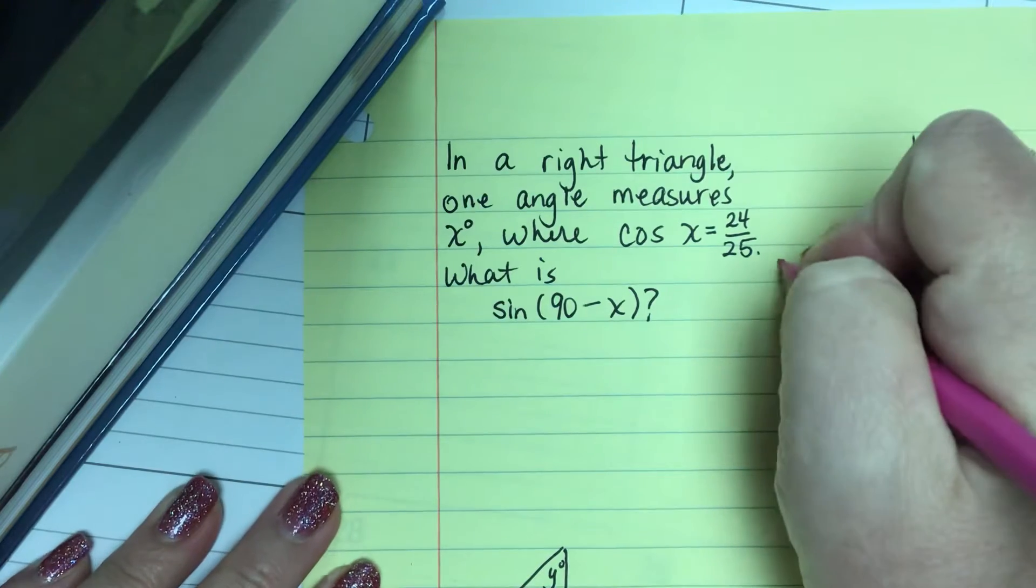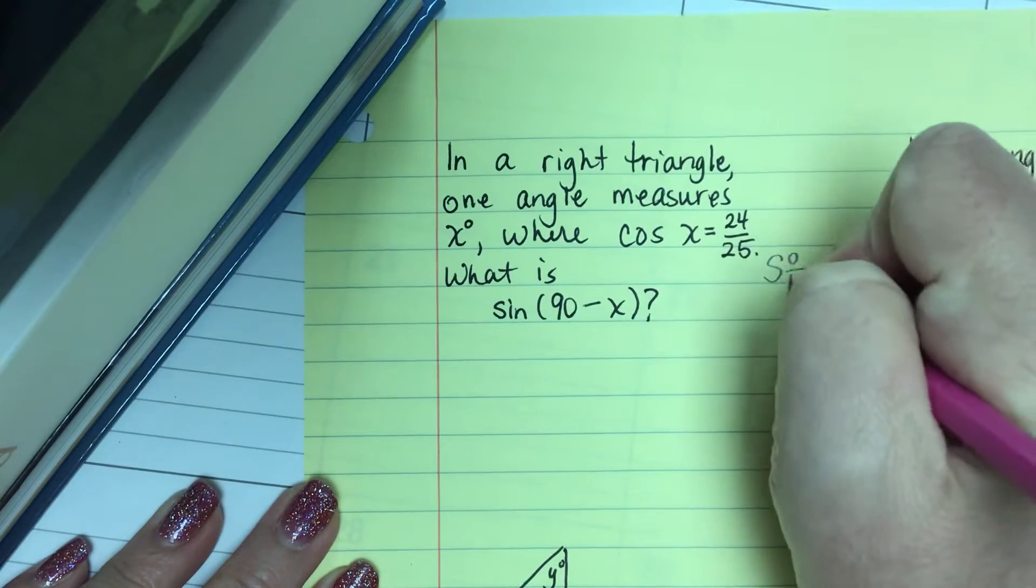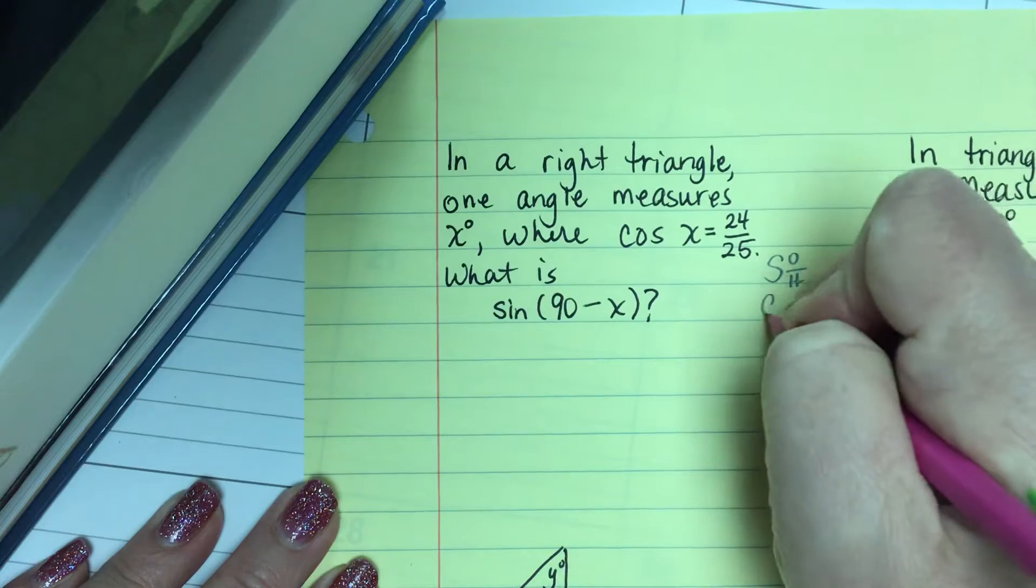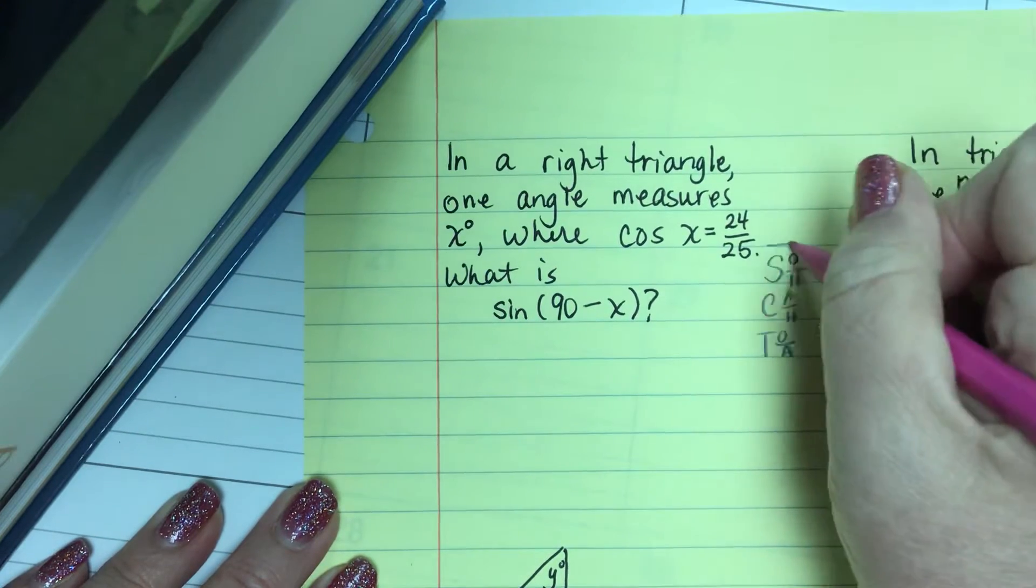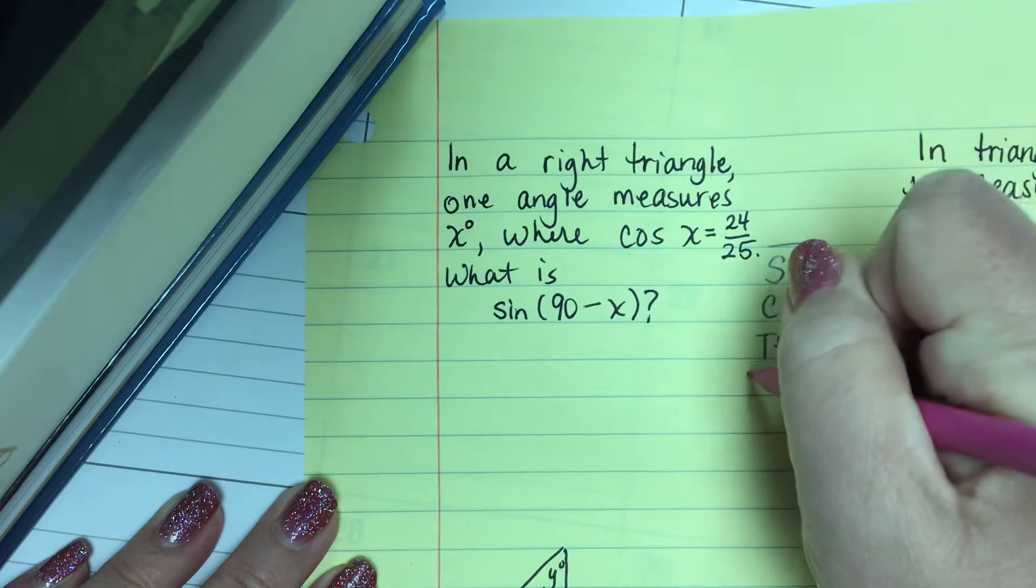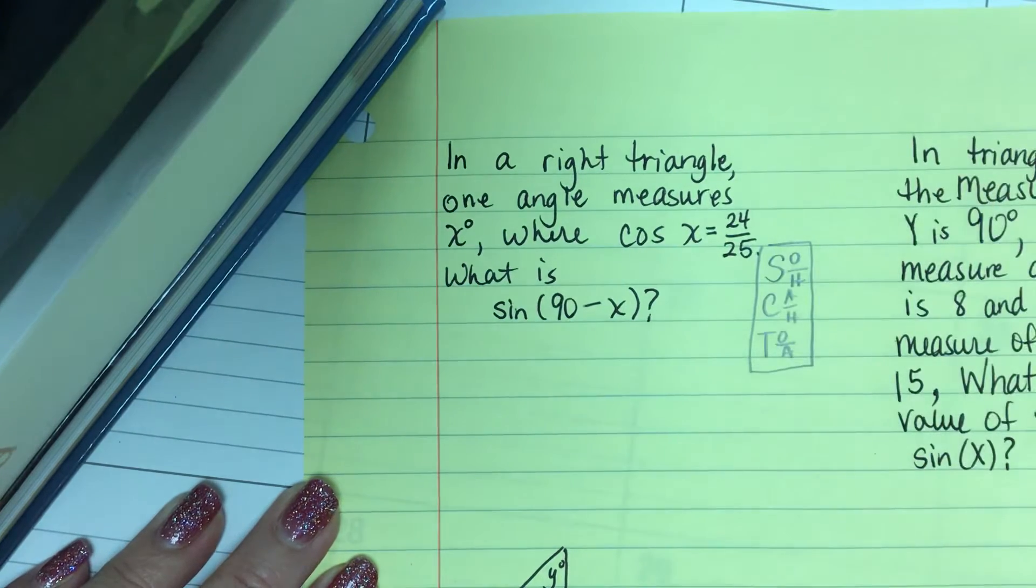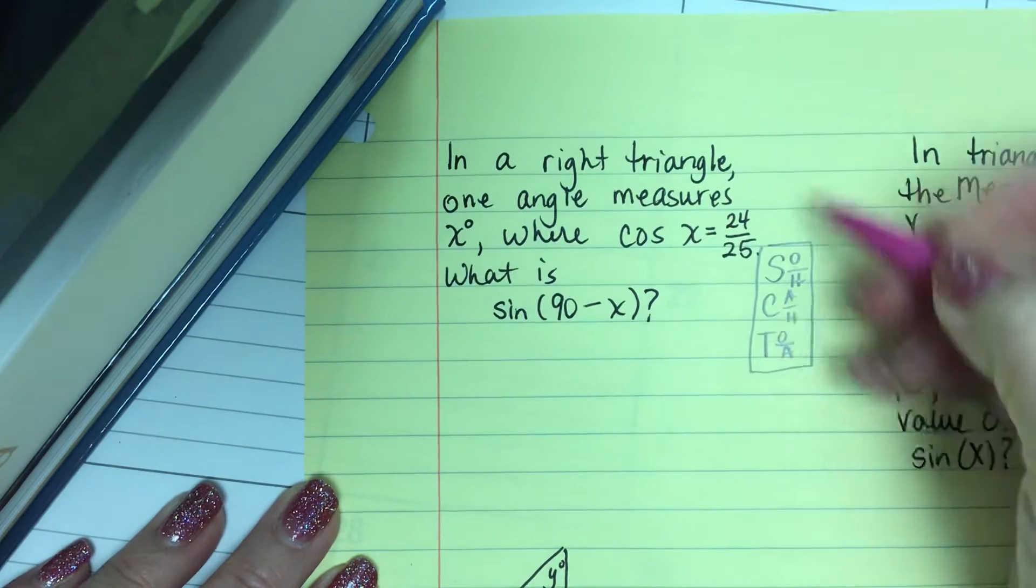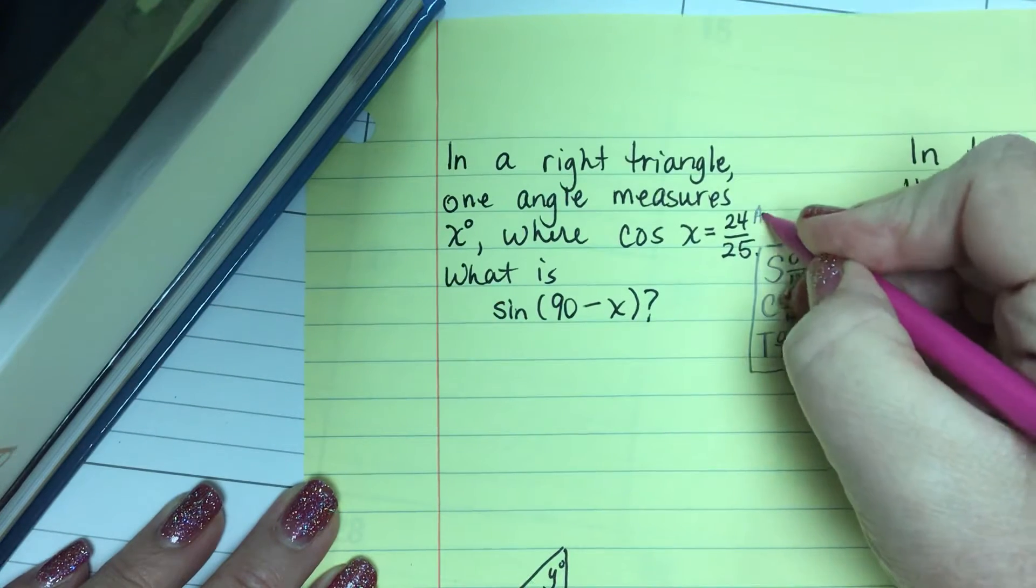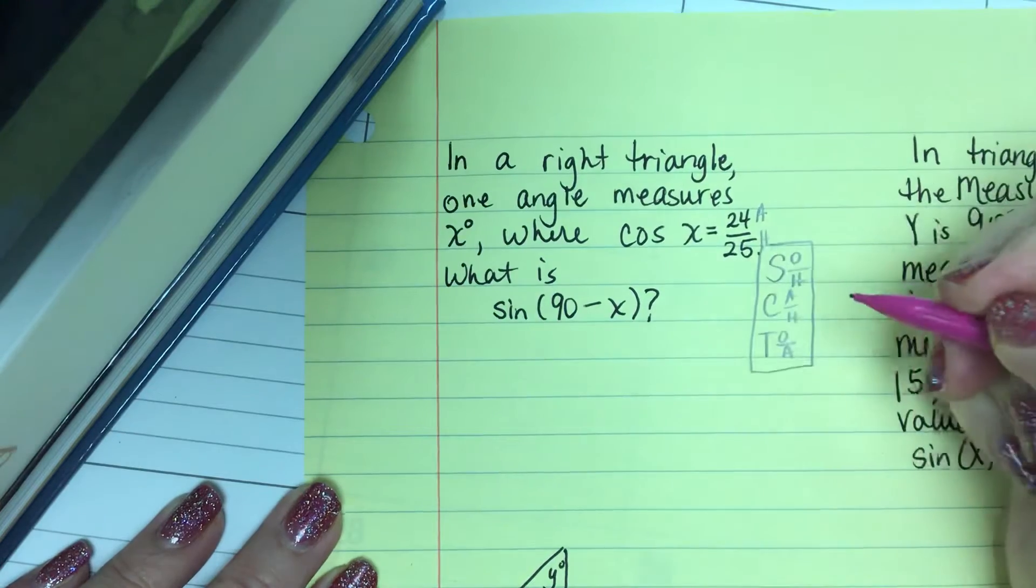First of all I want to talk about SOHCAHTOA. This is your little mnemonic that you use to remember the trig ratios. When I look at this I have the cosine, I have the adjacent side and the hypotenuse, the ratio of those.